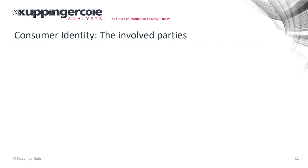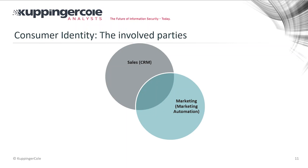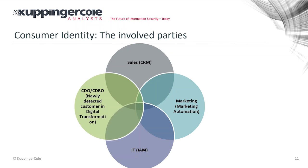When we look at who is involved, it becomes very clear that for all things around consumer identity, privacy, and consent, we need to bring many parties to the table. We have sales with CRM systems, marketing with marketing automation systems, IAM people managing identities and authentication, the chief digital officer looking at customers from a digital transformation perspective, and those looking at new business models. We need to understand what this means from a privacy perspective and what new types of consent are needed.